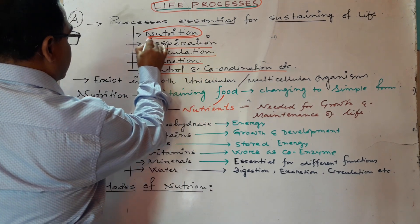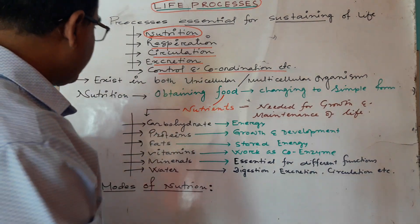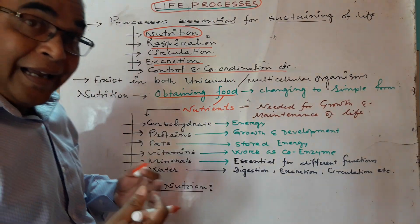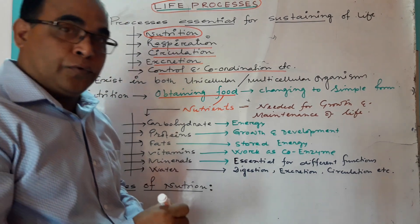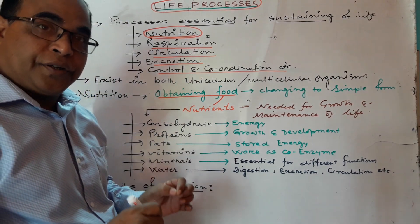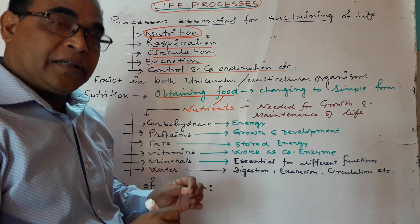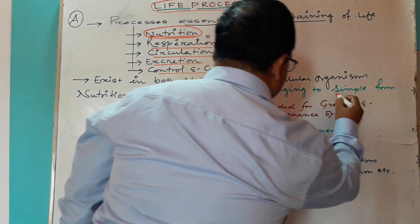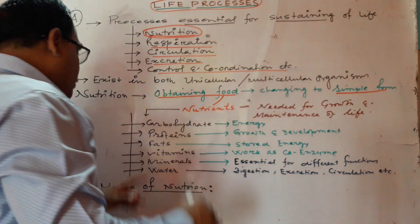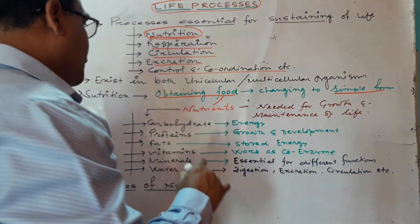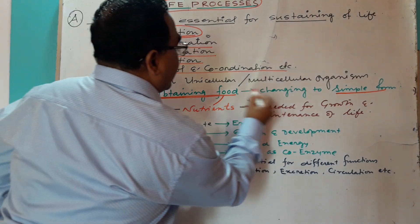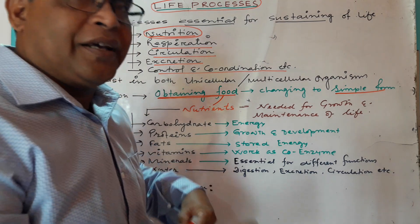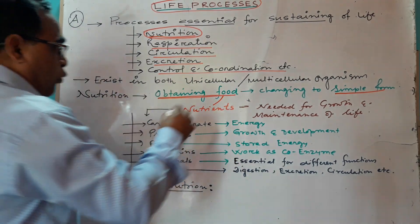So today we are going to discuss about the nutrition part. What is nutrition? Nutrition means obtaining of food and conversion of this food. Whatever we take as food, we take it as complex food. So complex food has to be converted into simple form. Nutrition is the process where obtaining of food as well as conversion of complex food into simple form is done.